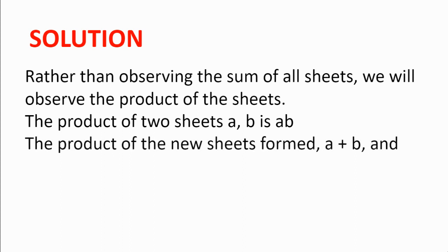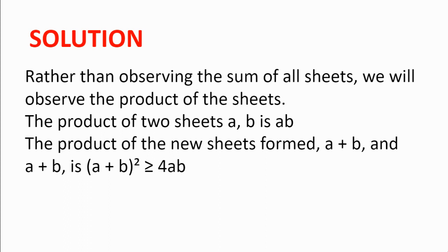Now, when we complete this step, the two sheets will have the number A plus B written on them, and so their product will be (A plus B) squared. Using the AM-GM inequality, we can find that (A plus B) squared is greater or equal to 4 multiplied by A multiplied by B. Alternatively, we can notice that (A minus B) squared is a square and so is greater or equal to zero, and we can add 4AB to both sides to get this inequality.